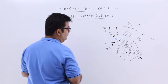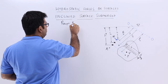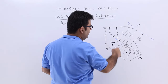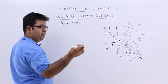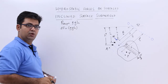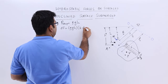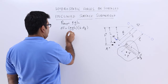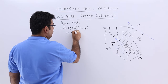Let us find out the pressure on this strip. The pressure on this strip, as we did for the vertical surface, is rho times g times h, where h is the distance of the strip from the free surface. The small pressure force on this strip is dF = rho·g·h·dA, where the area dA = B·dy. So this becomes rho·g·h·dA.